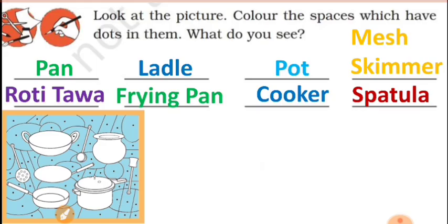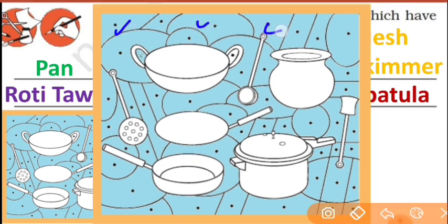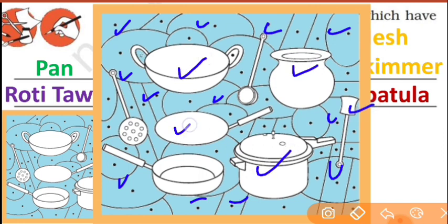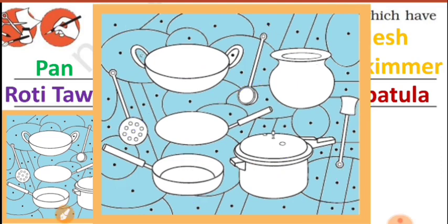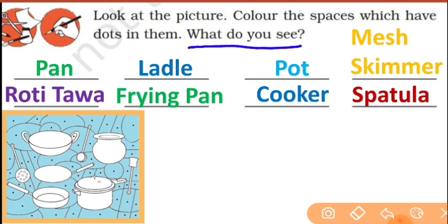After you color, you will see this structure. You can see these are the utensils used in cooking. Yes, in your kitchen you can see these utensils. In the picture you have to color the dots, then you can see the utensils.